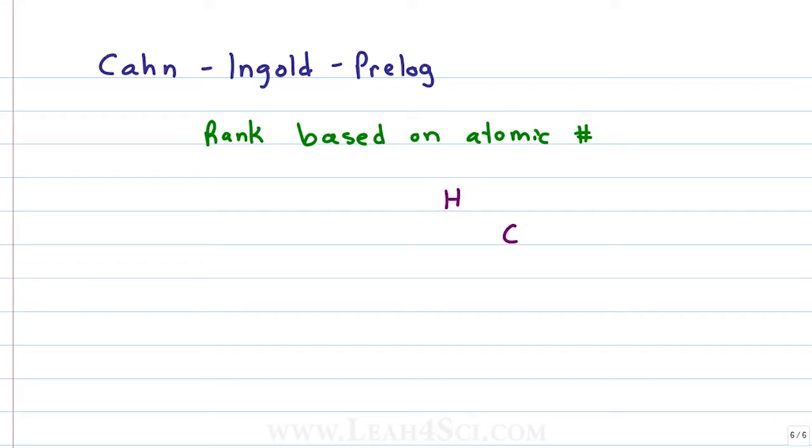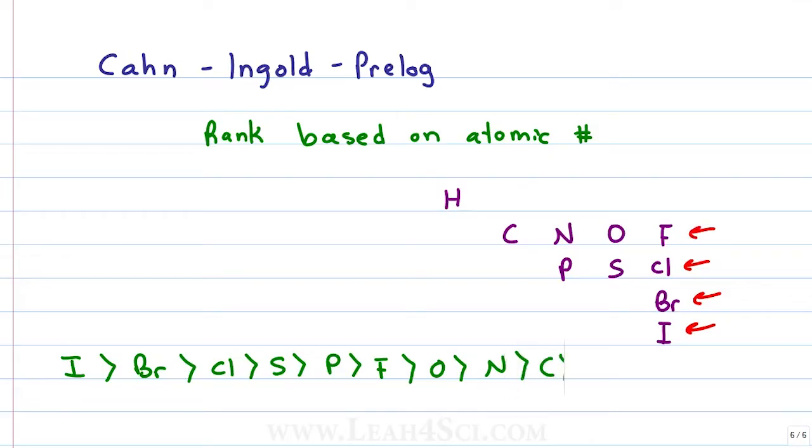We have hydrogen, then carbon, nitrogen, oxygen, fluorine. Below that we have phosphorus, sulfur, chlorine, and then bromine and iodine. These 10 atoms are the most common that you're going to see especially in a topic like E and Z. As a reminder, iodine is your highest priority, then bromine, then chlorine and sulfur and phosphorus, then fluorine, oxygen, nitrogen, carbon, and hydrogen is always your lowest. If there is a deuterium thrown in, remember that it outranks hydrogen because it's just a heavy isotope of hydrogen. If you're comfortable with ranking, let's move on.